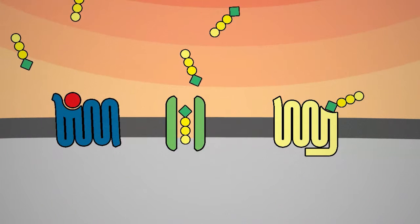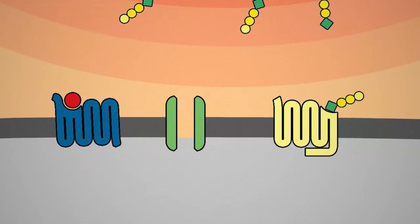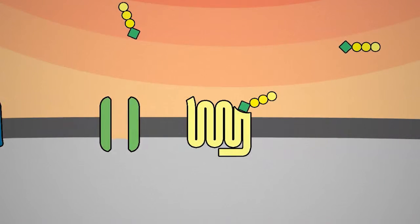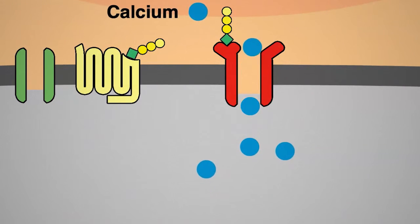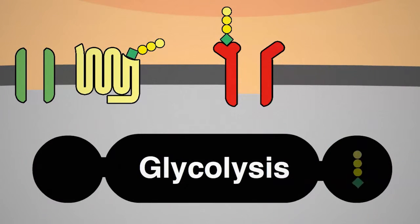After cell stimulation, a second phase of ATP release causes the activation of P2X-type purinergic receptors that facilitate the influx of calcium from the extracellular space. This phase is paralleled by a metabolic transition from mitochondrial to glycolytic ATP production, allowing cells to function under hypoxic conditions.